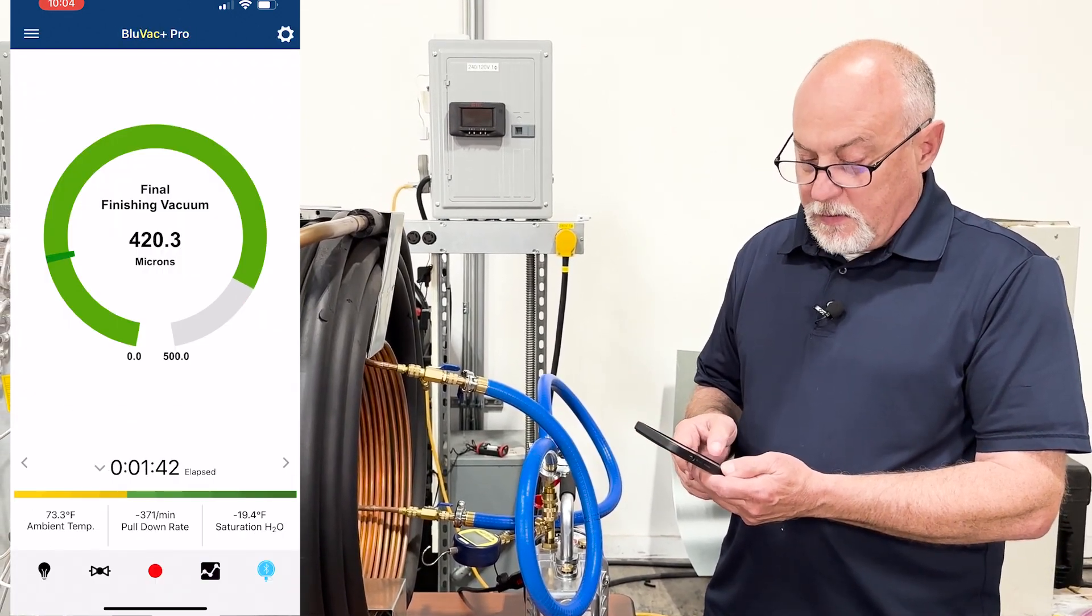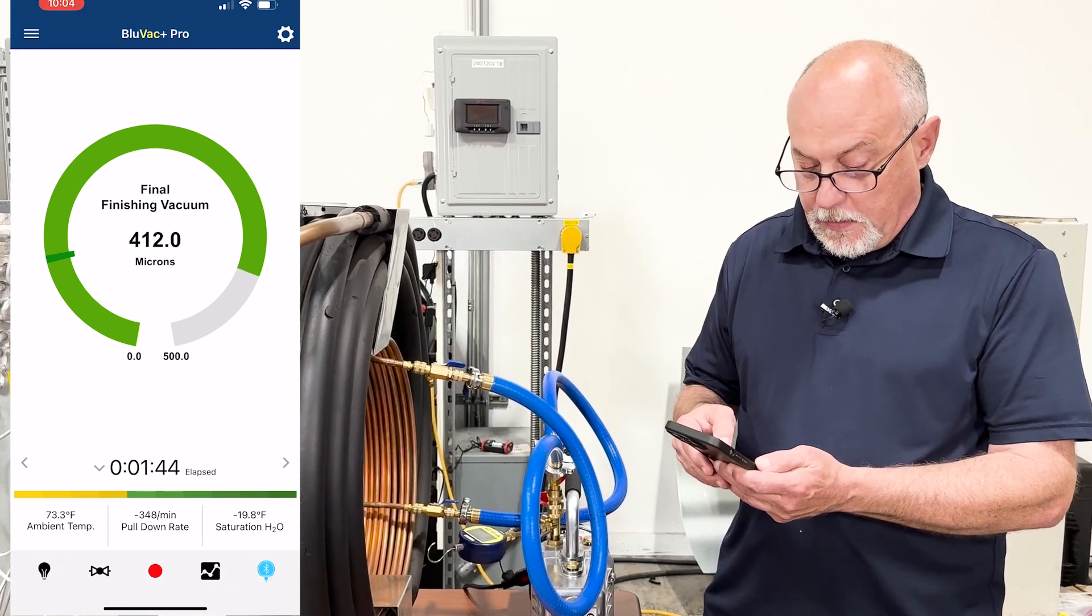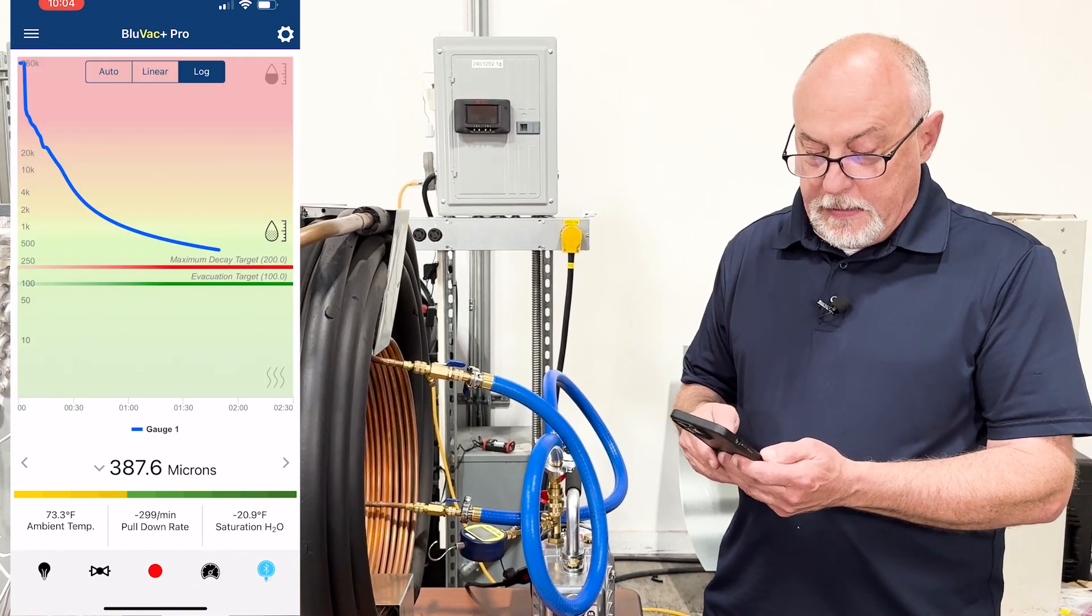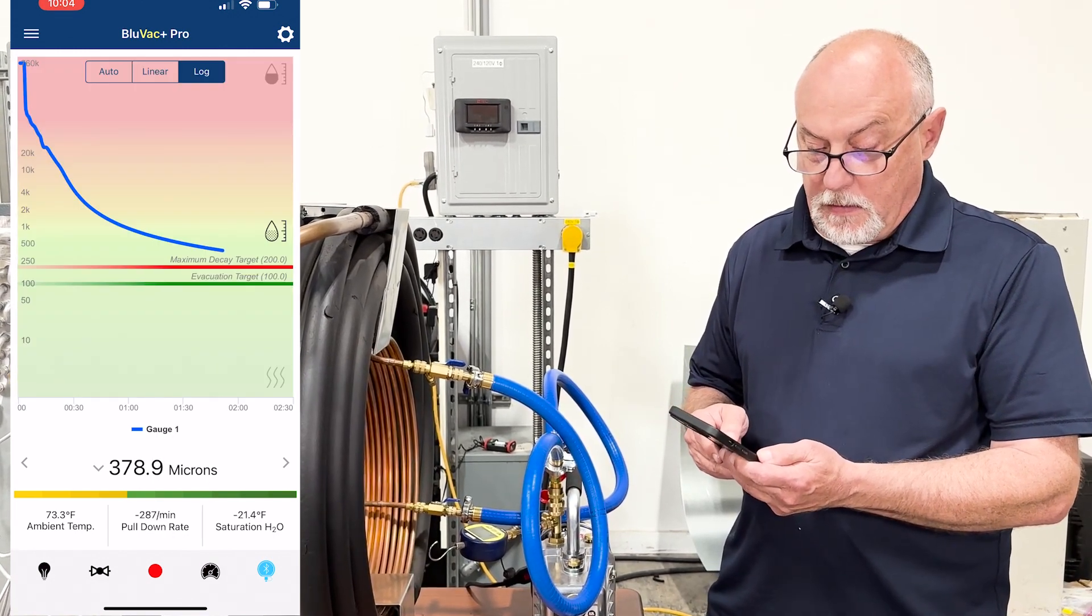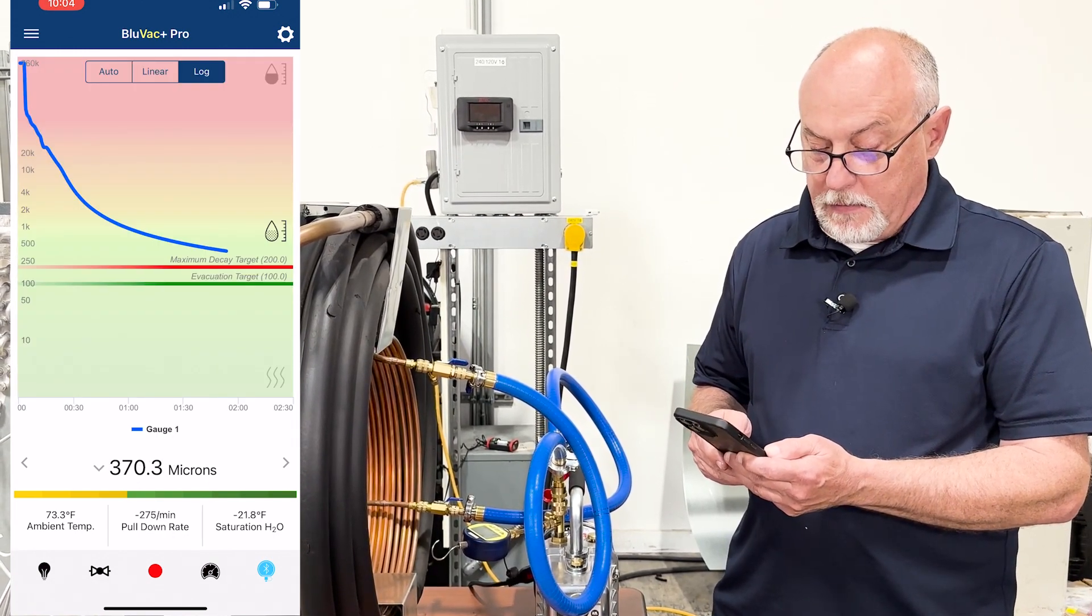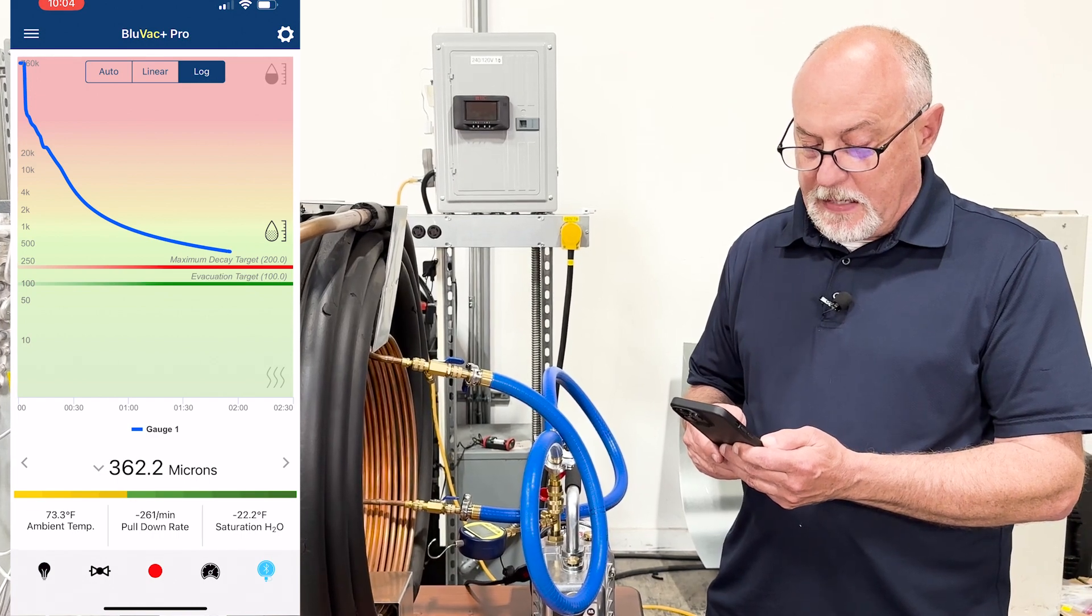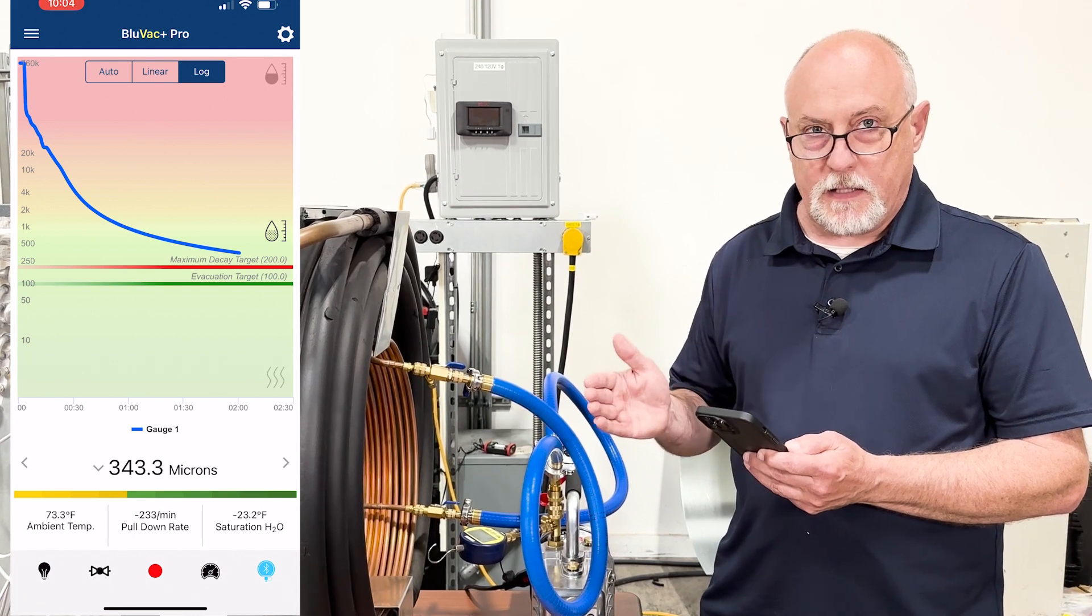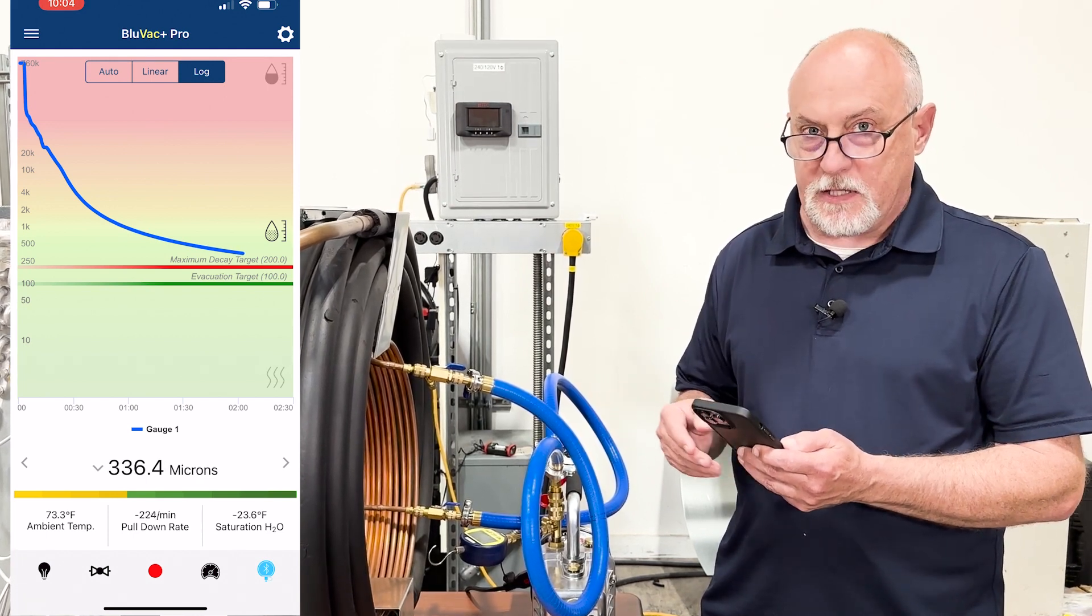So now if I go here, you can see we're already down in a couple minutes here. We're at one minute and 45 seconds. We're already at 400 microns on there. And you can see we're coming down on our graph quite quickly. And we're just about down to our minimum decay target. So we're going to pause here for a minute and let this come down till we hit the targets, and I'll show you what happens next.